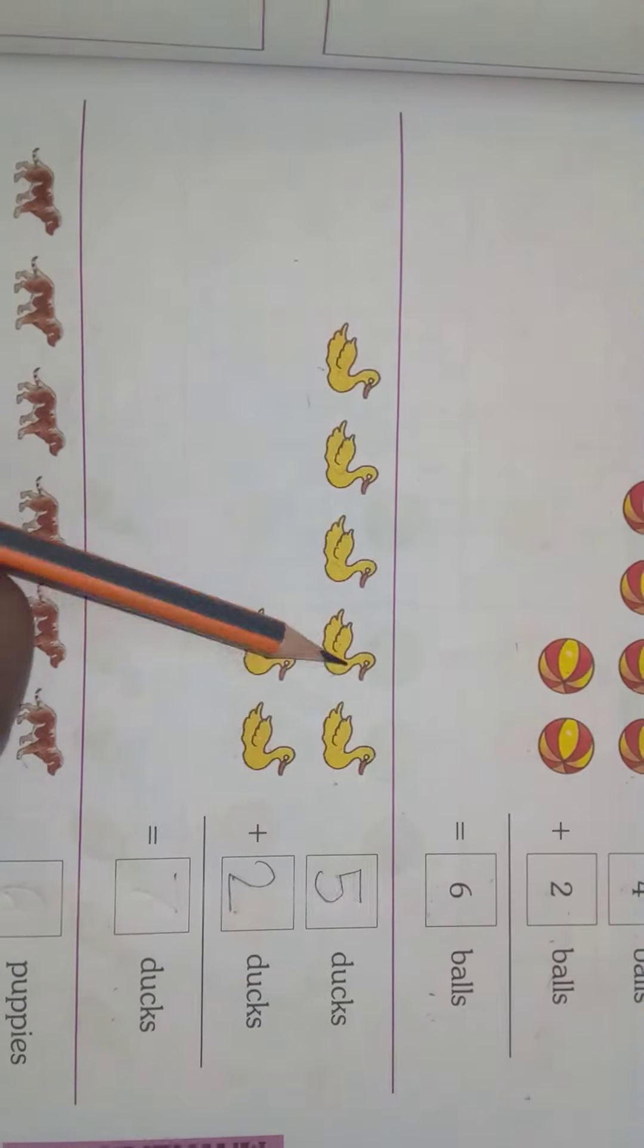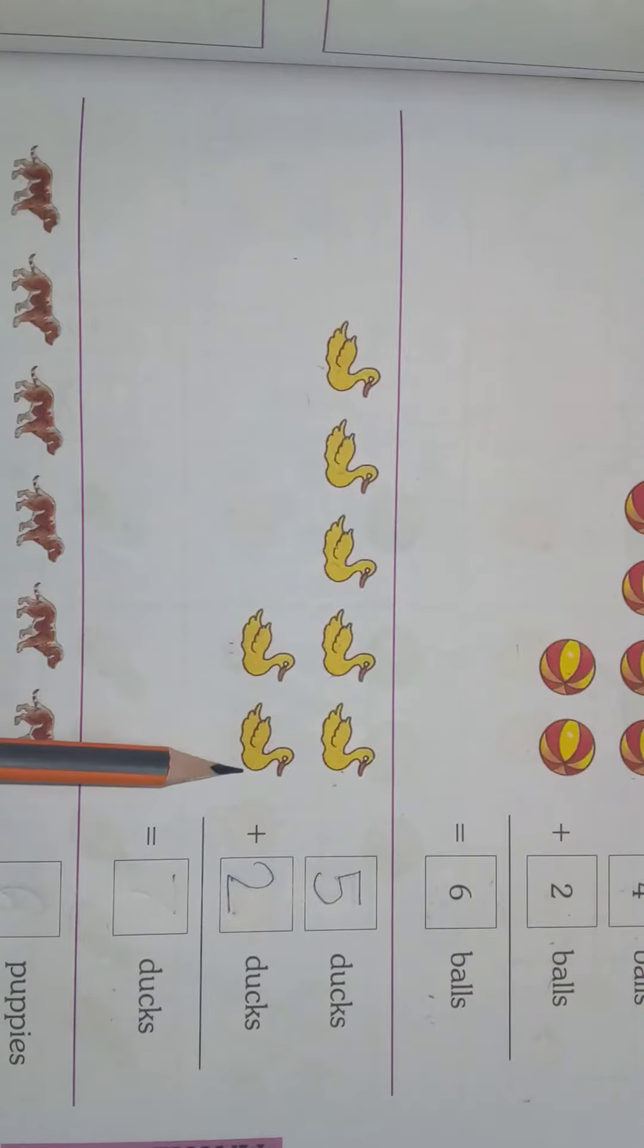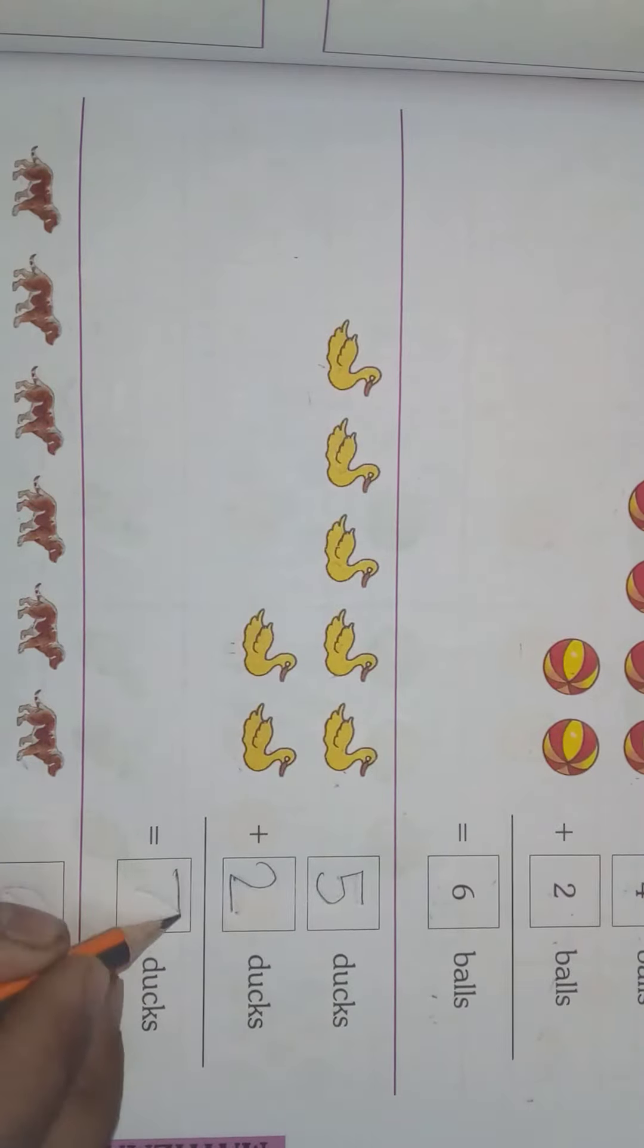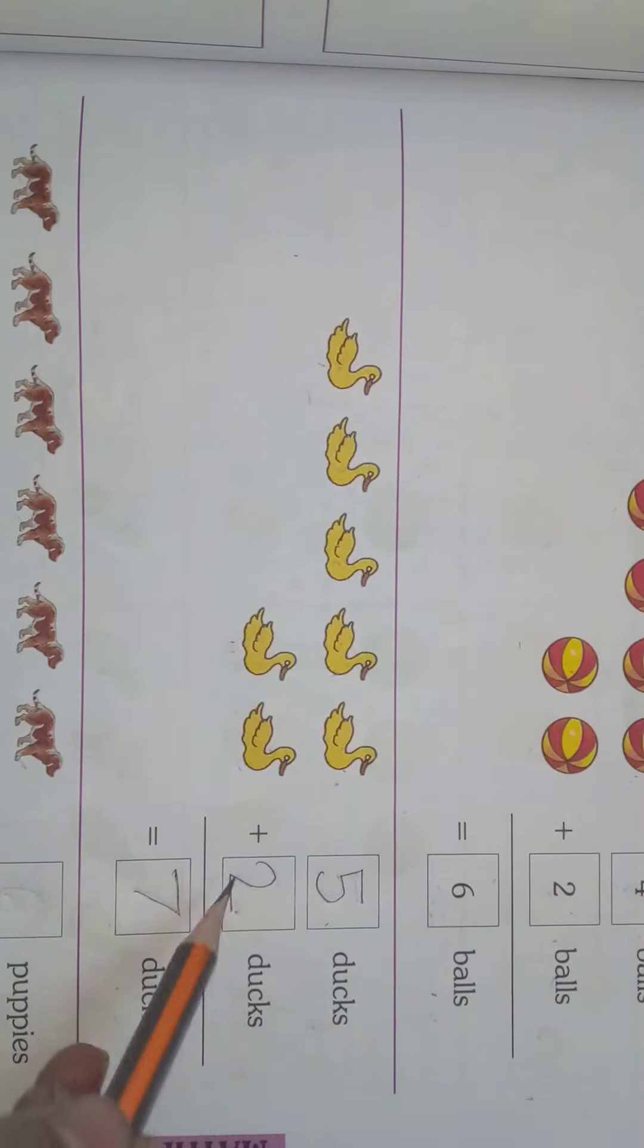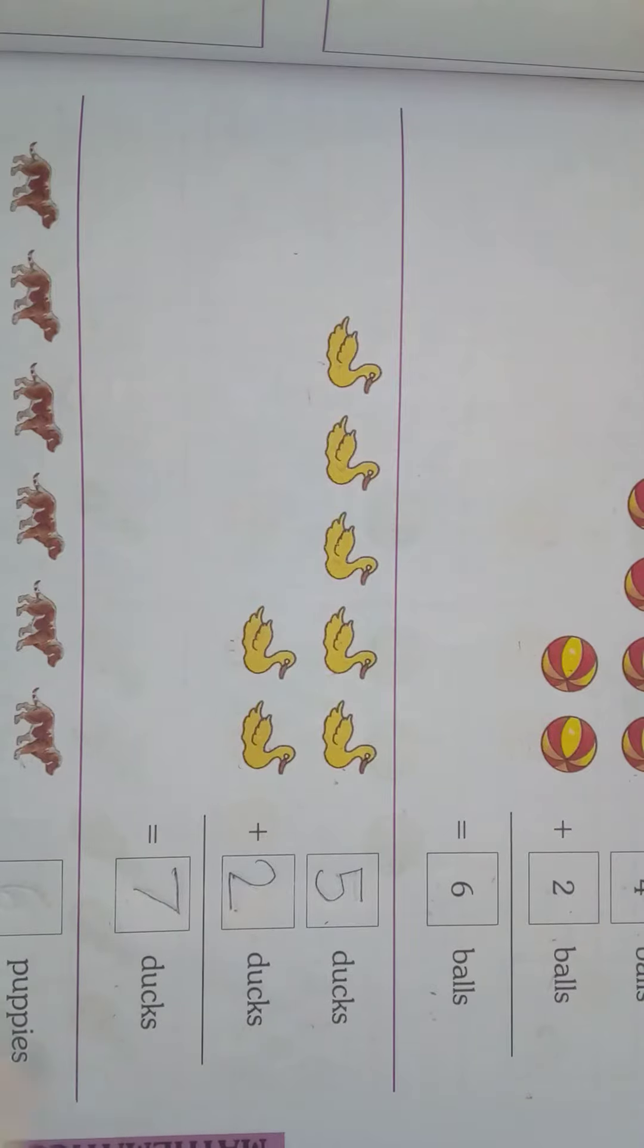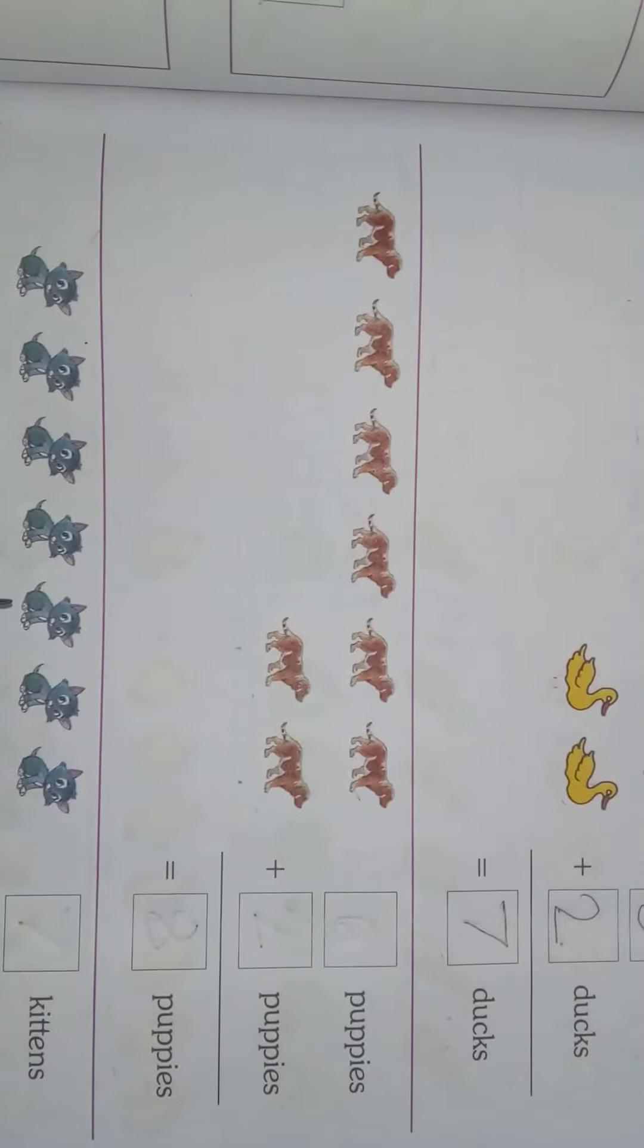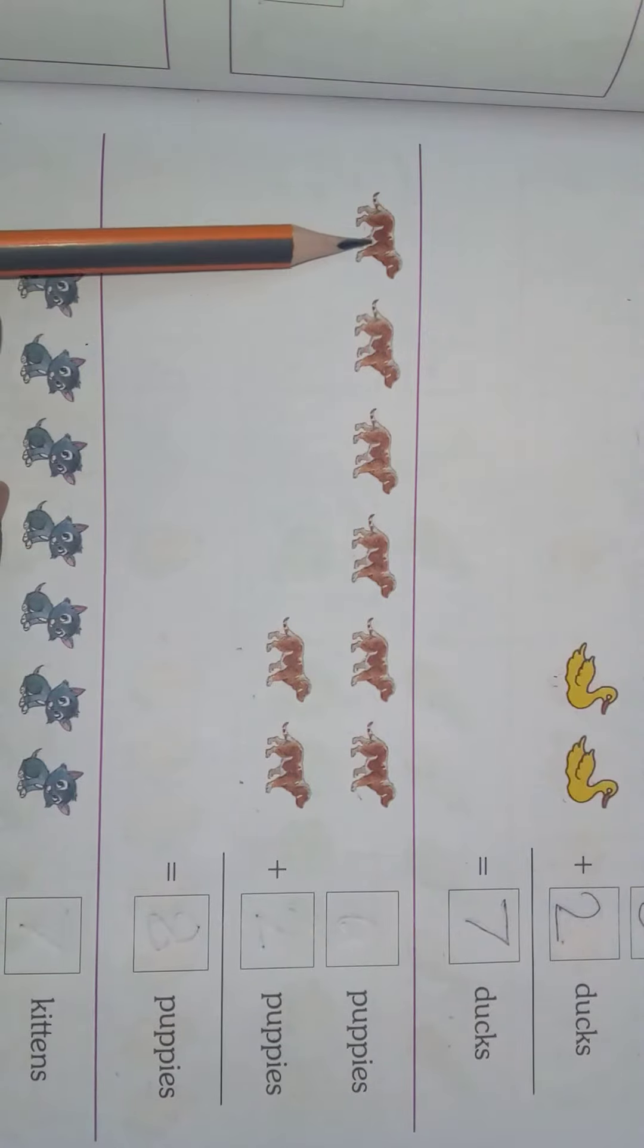Now we will count fully. 1, 2, 3, 4, 5, 6, 7. How many ducks? 7 ducks. 5 ducks plus 2 ducks is equal to 7 ducks.